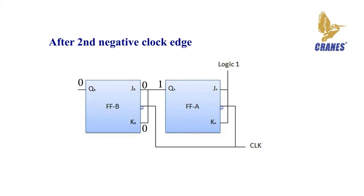On the arrival of the second negative clock edge, flip-flop A toggles again and QA changes from 1 to 0. But at this instant QA was 1, so JB equals KB equals 1 and flip-flop B will toggle — hence QB changes from 0 to 1. QB and QA is equal to 1 0 after the second clock pulse.